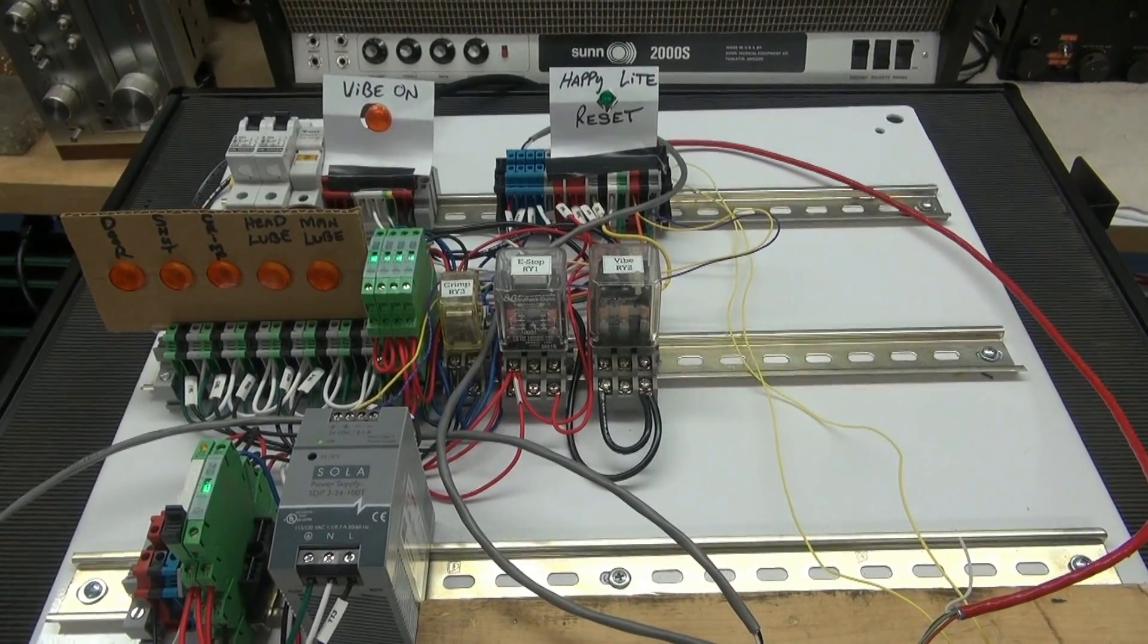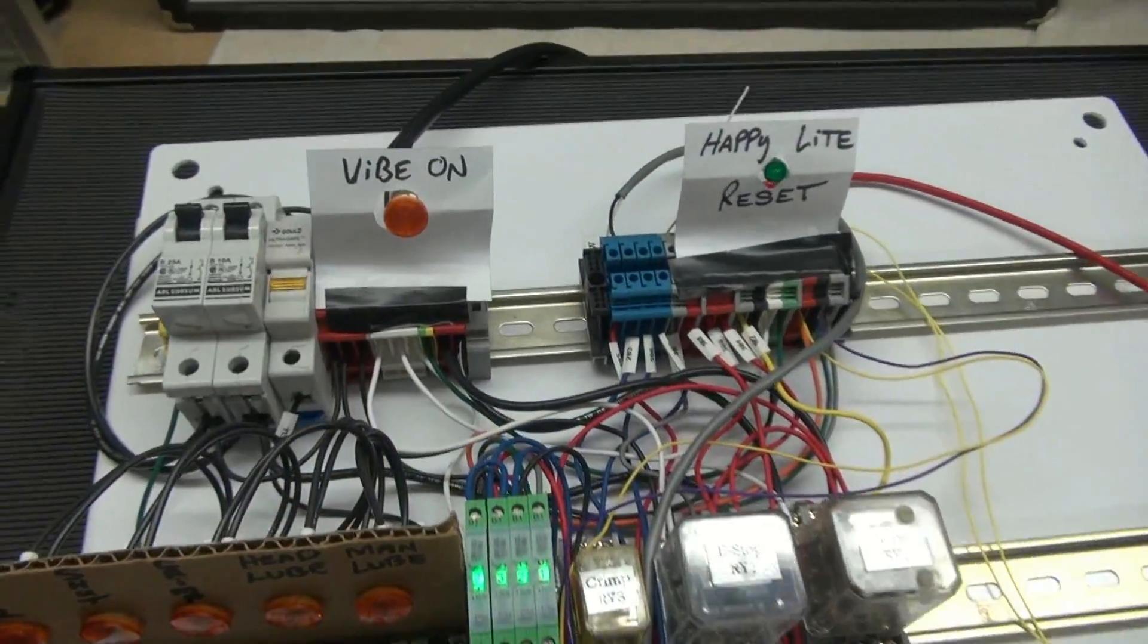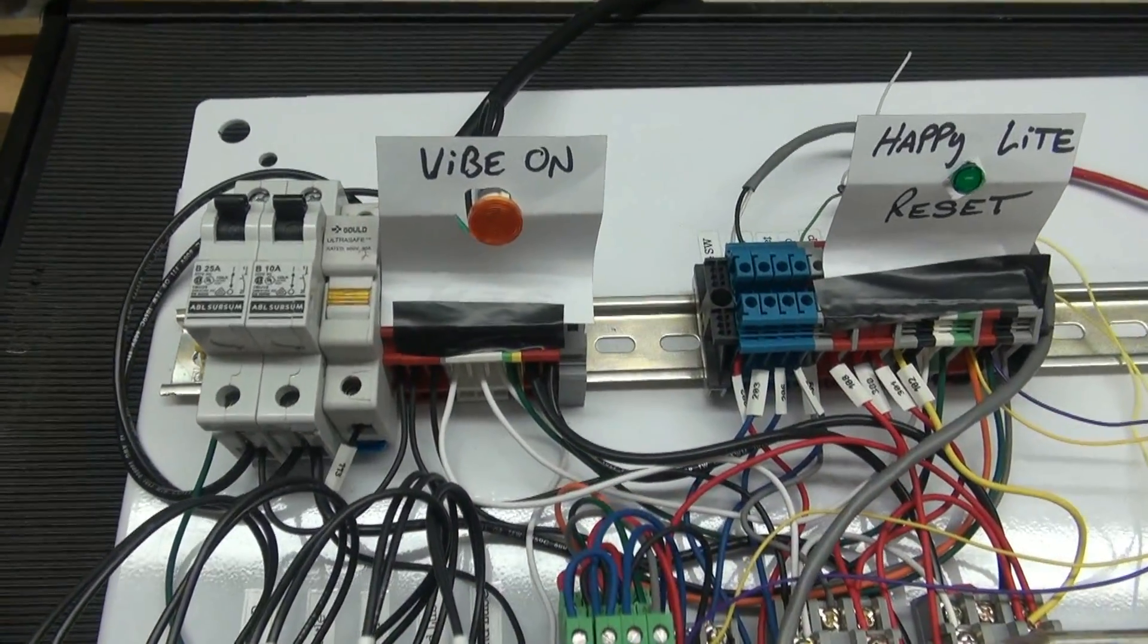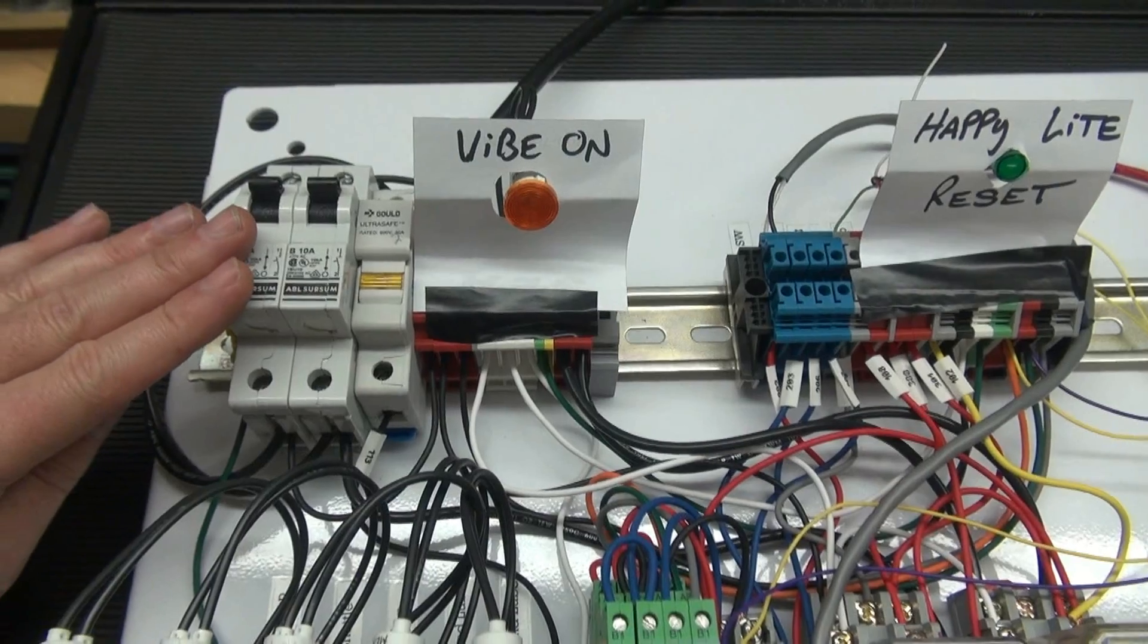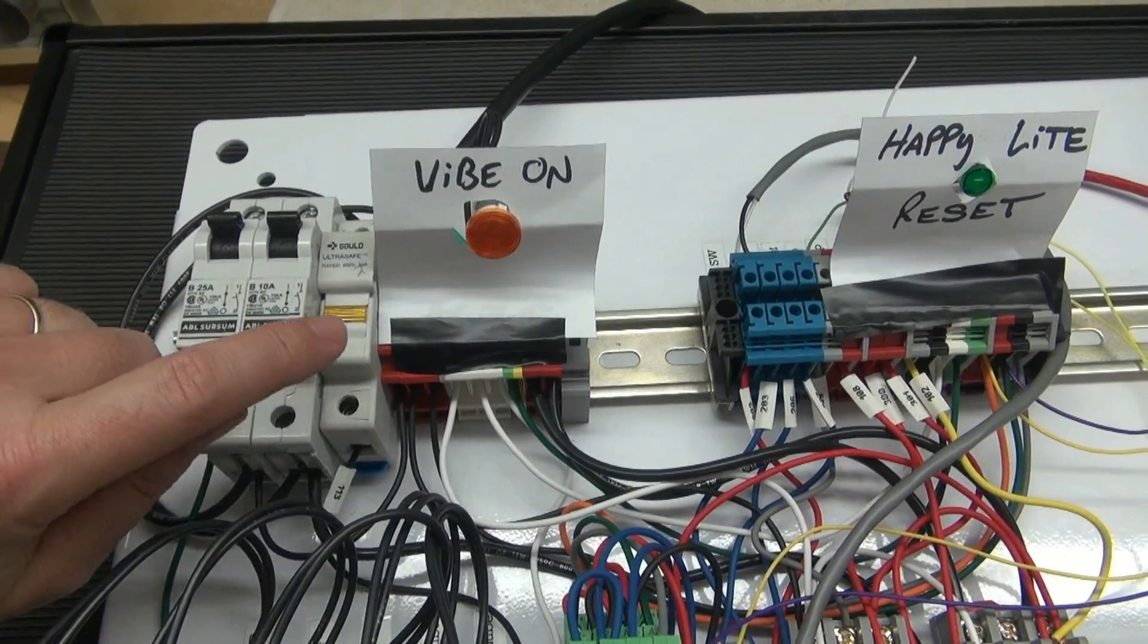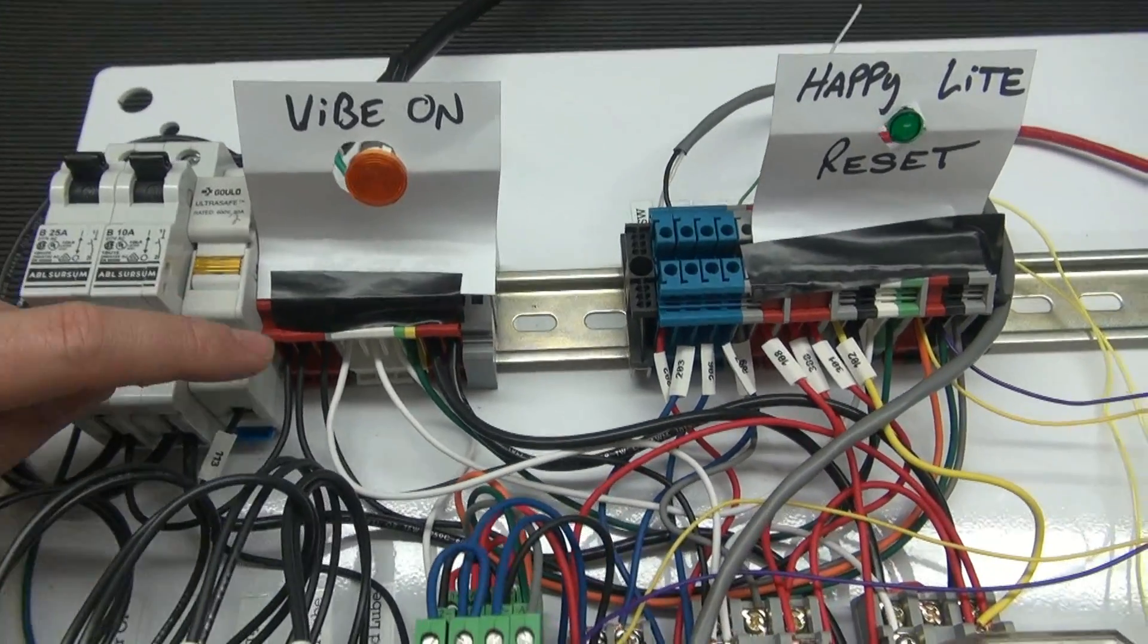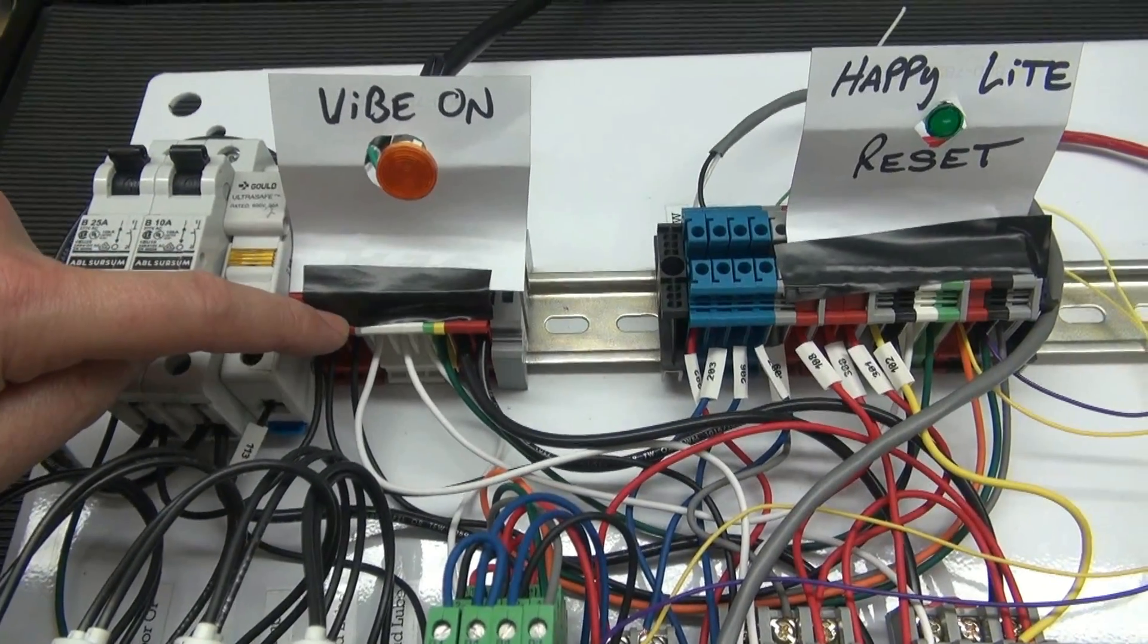So let's do a general overview of the control panel. I always arrange these from left to right. Here's your AC input, a couple circuit breakers there, this little guy's a fuse for the 24 volt supply.